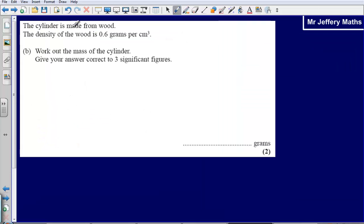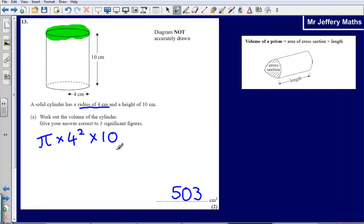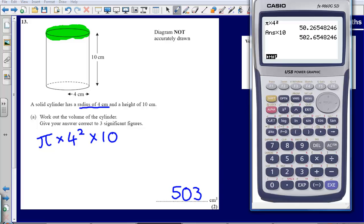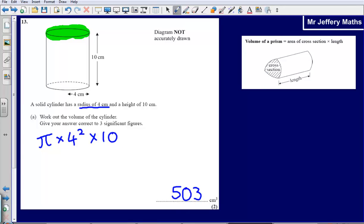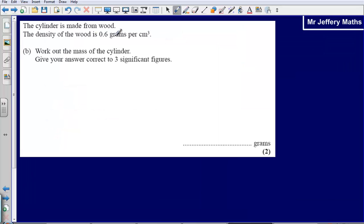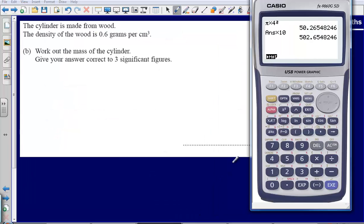Part b tells us that the cylinder is made from wood, the density of the wood is 0.6g per cm³. Work out the mass of the cylinder. We've just worked out that it's 502.654 - I'm going to leave that in my calculator. We're told that it's 0.6g per cm³, so I'm simply going to multiply that by 0.6.